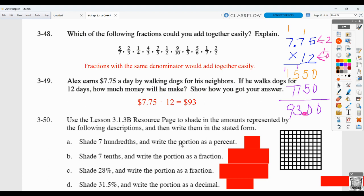For 3-50, you can use the resource page. You could also use a hundreds chart, shade in these, and then write them in the stated form. So here they want us to shade seven hundredths, which would be seven of these little squares, and write it as a percent. Well, that'd be seven percent.